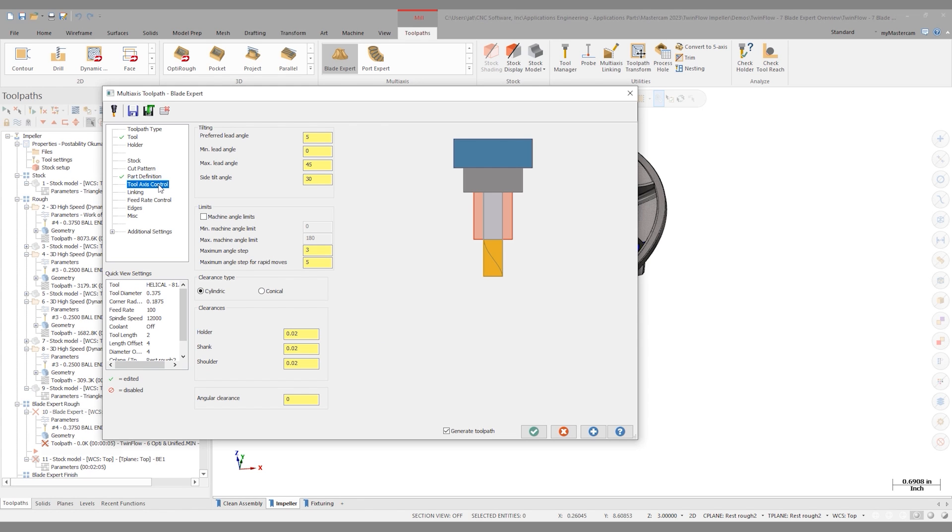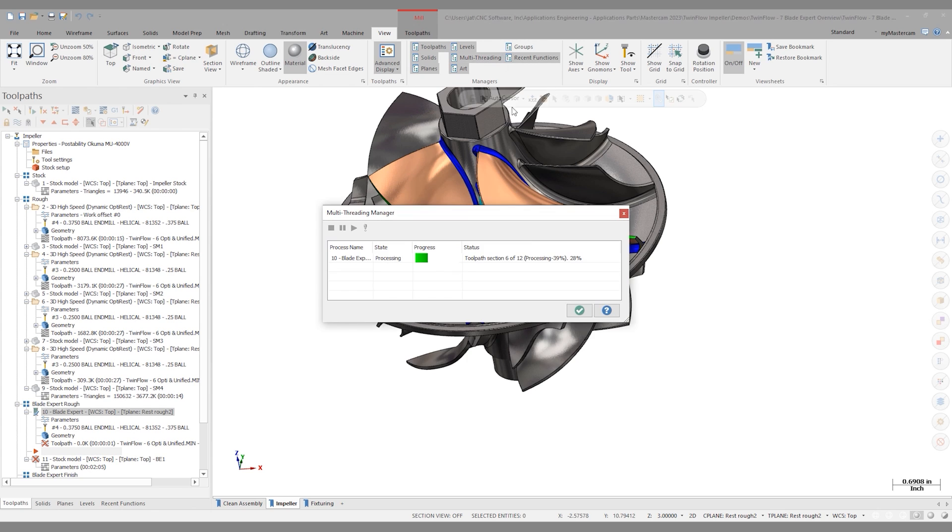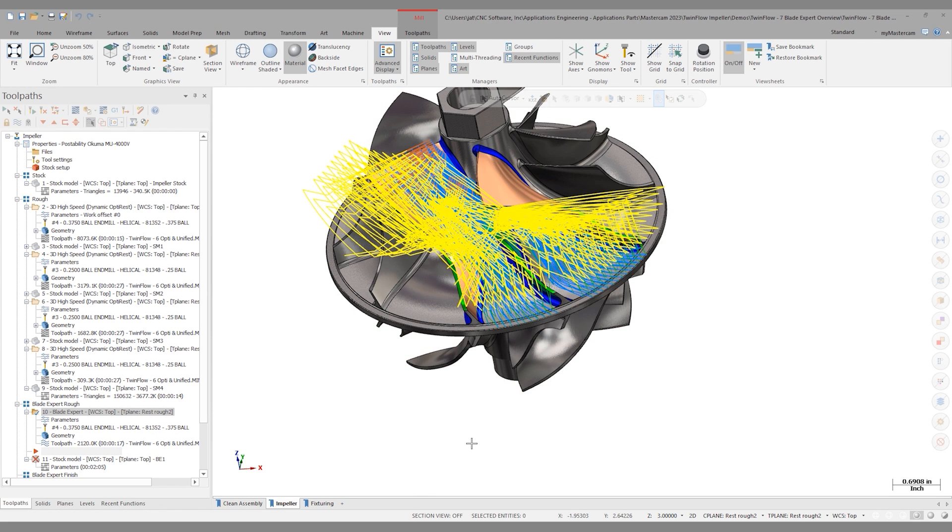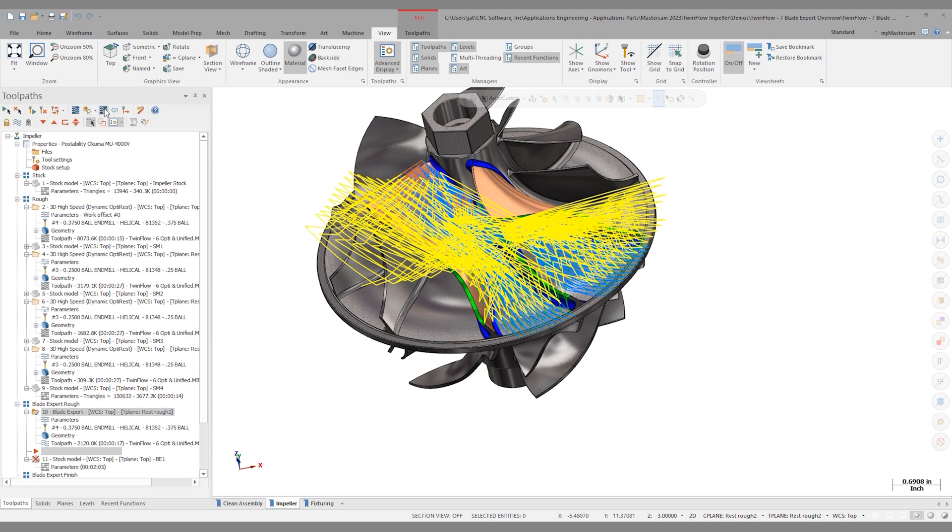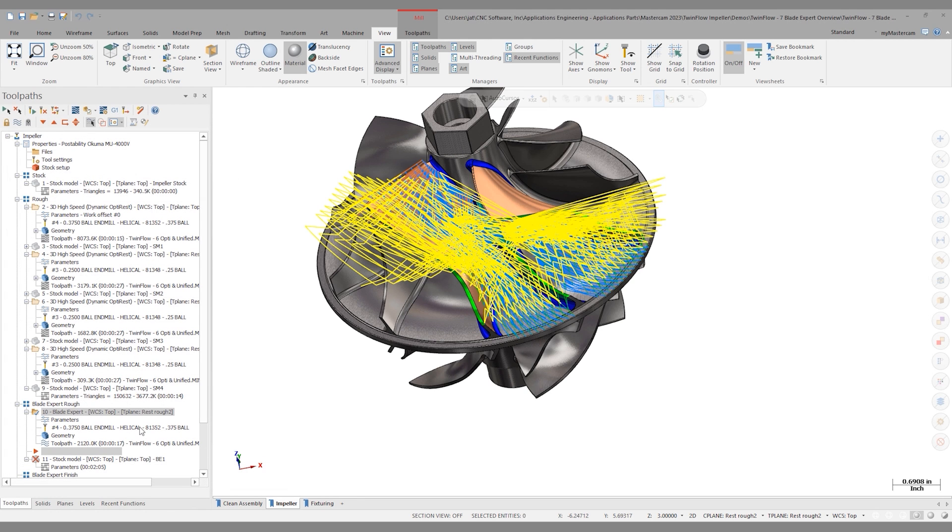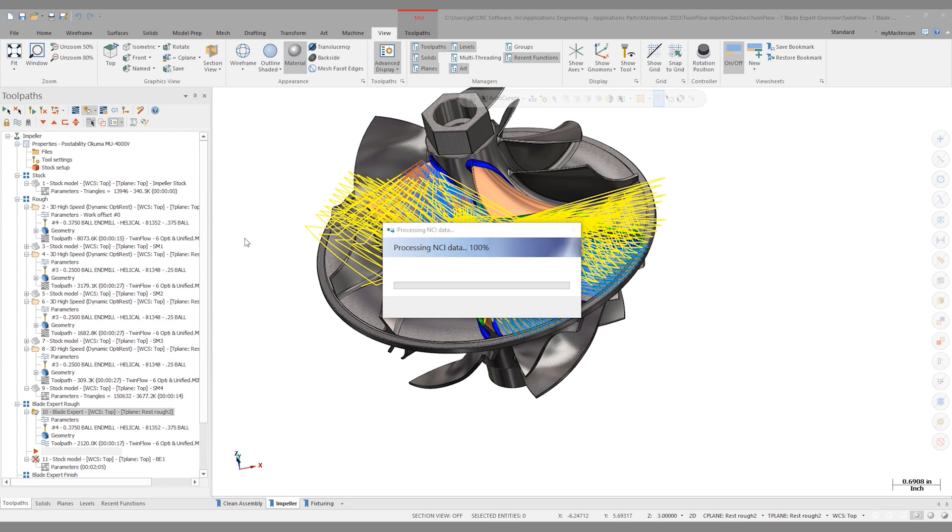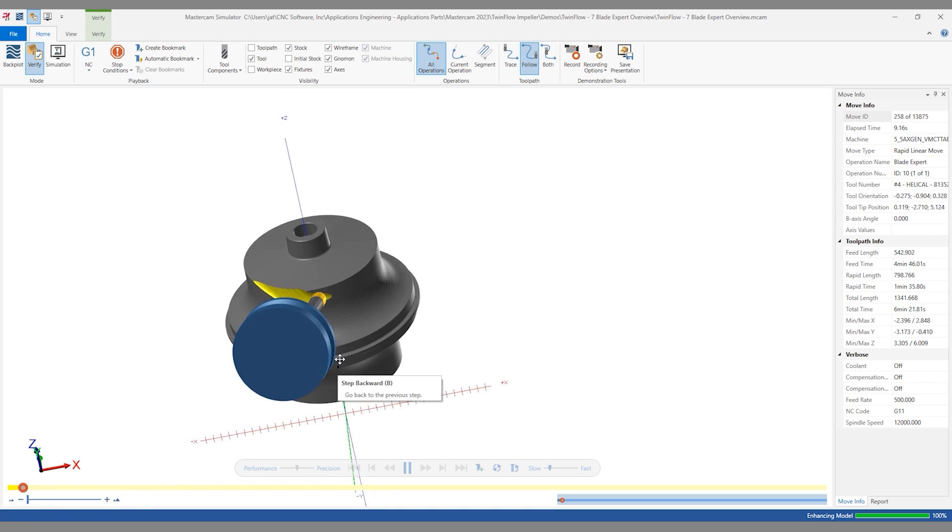I can move down to tool axis control, and we'll be discussing this in depth in a future video. For now, I want to leave this at the default. Let's generate this toolpath. Now, our 5-axis BladeXpert toolpaths are going to kick out to the multi-threading manager. I'll open that up, and this is where I can see the progress of that toolpath as it regens. All right, so we've already regenerated here. Let's launch a verify. I'll go into my verify options and pick a stock model, and I'll use the impeller stock. Click OK, and verify.